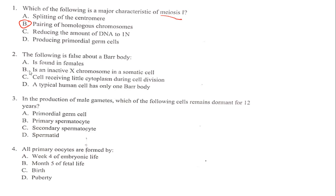The next question: which of the following is false about a Barr body? Option one — it is found in females — is correct. It is an inactive X chromosome in a somatic cell — also correct. The option about a cell receiving little cytoplasm during cell division is wrong. The only incorrect statement is option C.